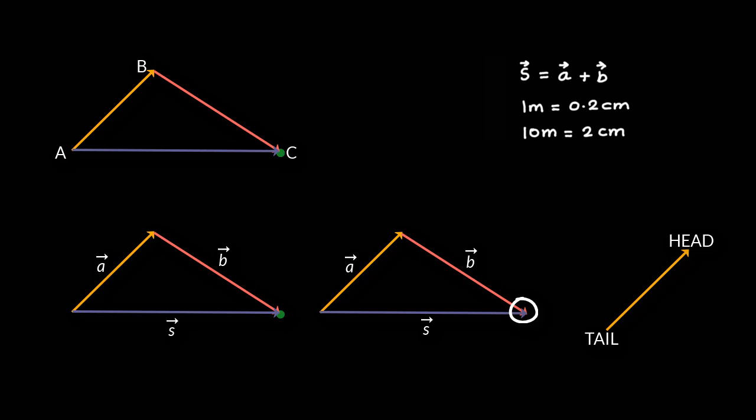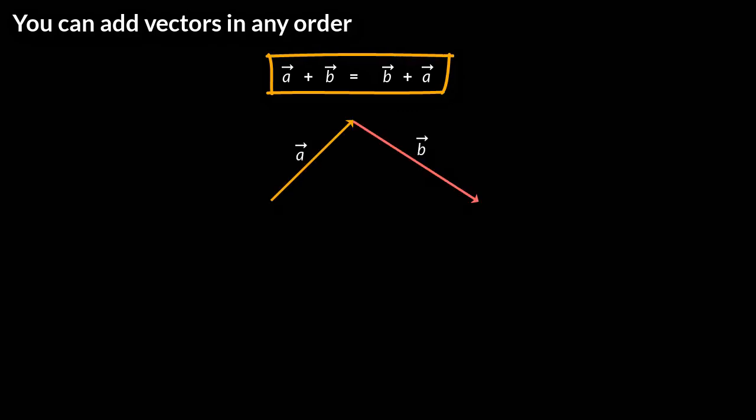So let us now quickly make a note of some properties of vectors. The first one is you can add vectors in any order. That is vector A plus vector B is same as vector B plus vector A. So you see vector A plus B is this vector. Now let us change the order. Then vector B plus vector A is this, that is the same as this what we found earlier.